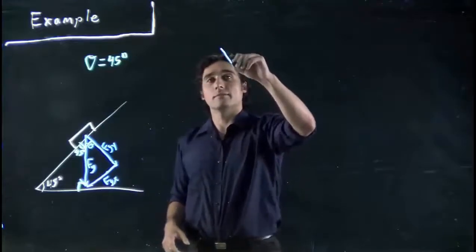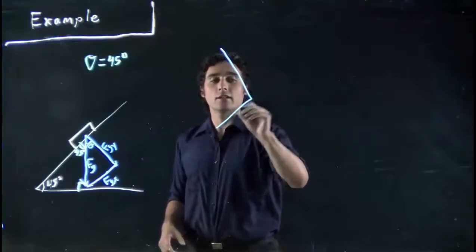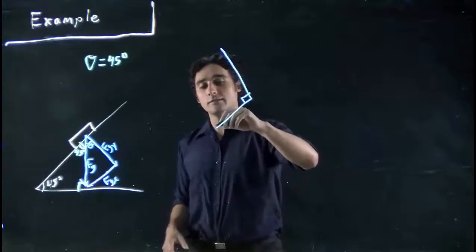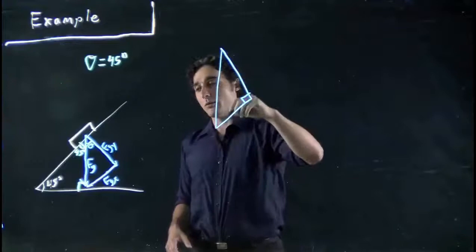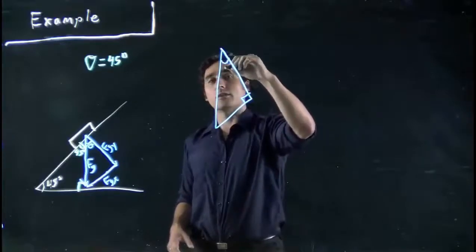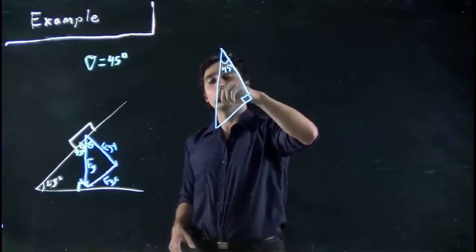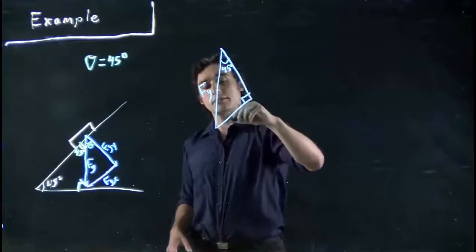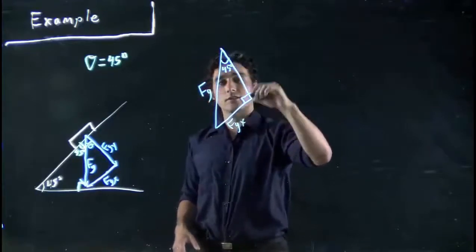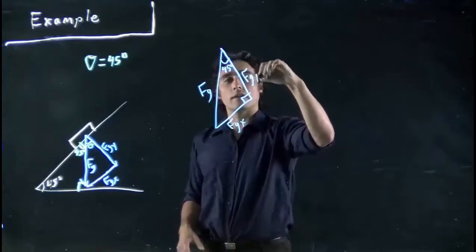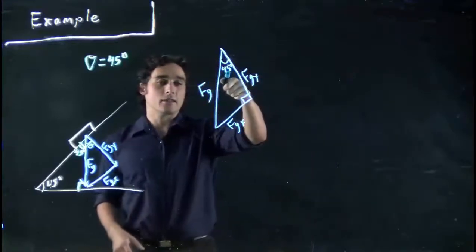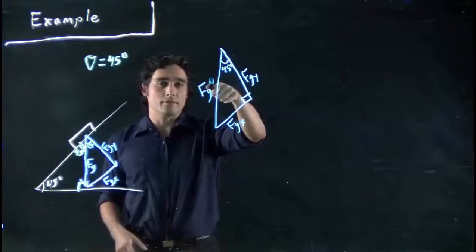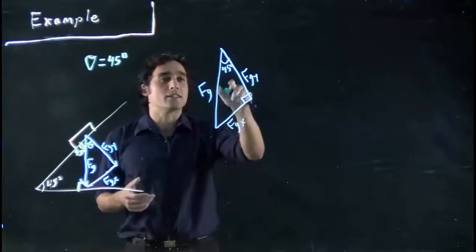So we need this Fg,x. So what do we really got? We've got a triangle. Let's even redraw it out for a second. We've got a good old right angle triangle. Here's our hypotenuse. And what we know is this angle is 45. This is Fg, good old Fg,x, Fg,y. If I want Fg,x, what do I got? This angle. And I have Fg. Supposedly. I theoretically would know what that is.